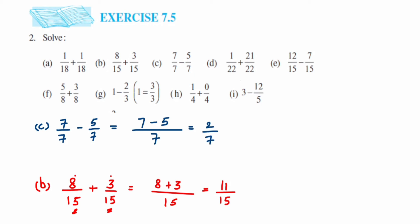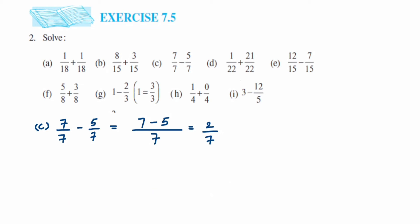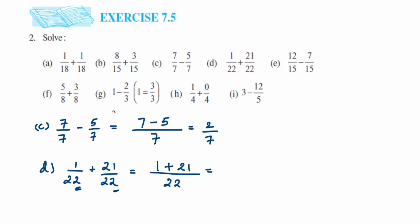Moving on, we have problem d. Again it's very simple — the denominators are the same. The question is 1 upon 22 plus 21 upon 22. Write the denominator 22 and add the numerators: 1 plus 21 equals 22. So we get 22 upon 22. We can cancel this — 22 ones — so we get 1 upon 1, which we can write as 1.